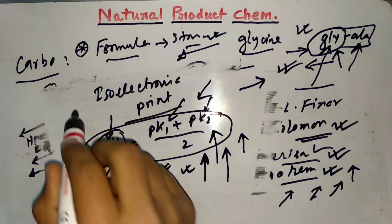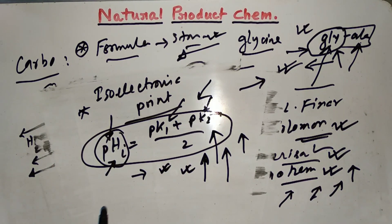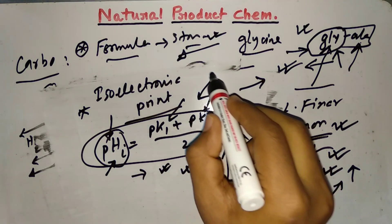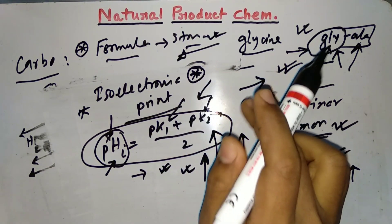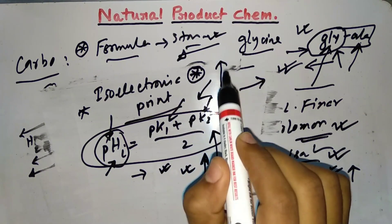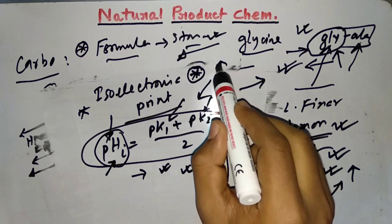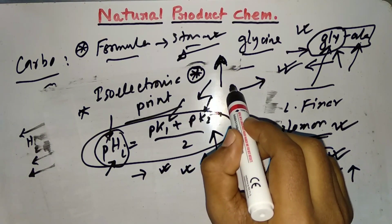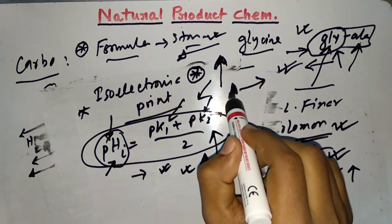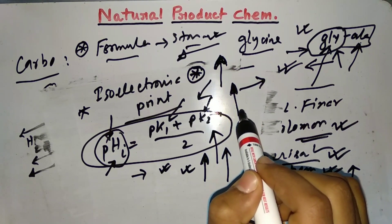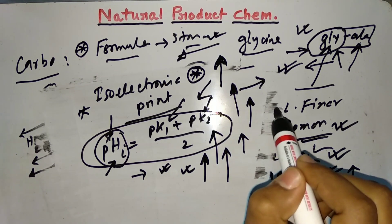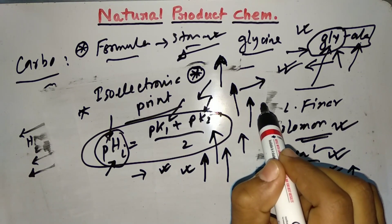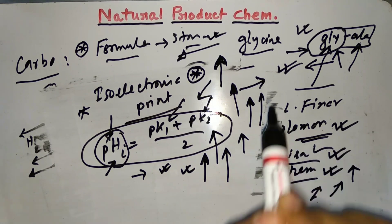The last topic from amino acids and peptides is separation of amino acids. This topic is actually very important, but I don't think they will ask questions from there, because there are a lot of reagents and it's very time-consuming. You can easily ignore the separation method, but if you don't want to miss any questions, then you should read that topic also.